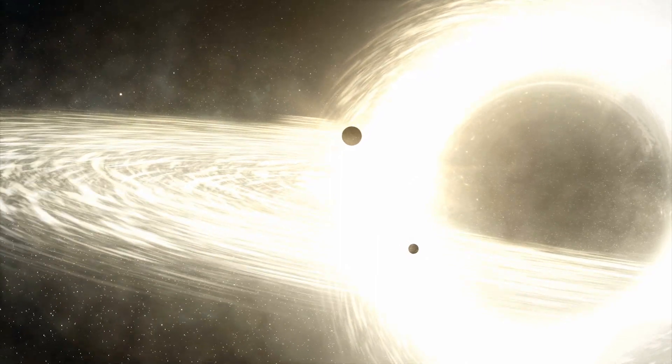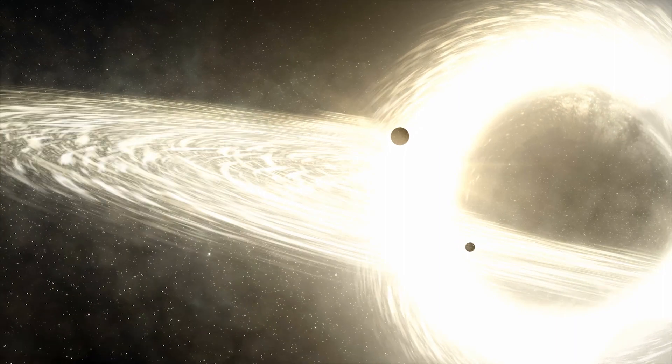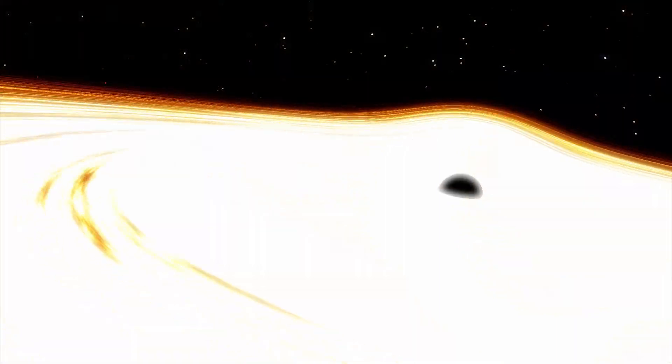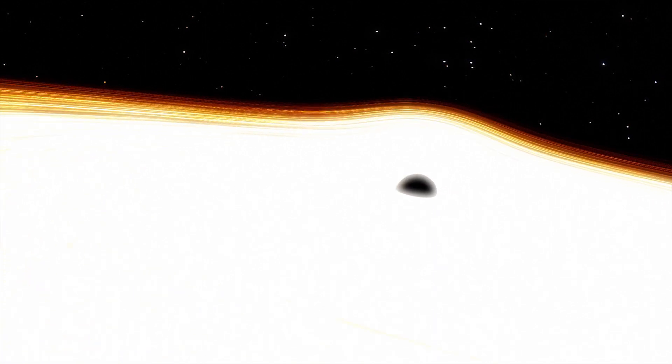The central black hole has a mass of about 55 million times that of the Sun. The one in the center of our galaxy is 4 million times more massive than our Sun.